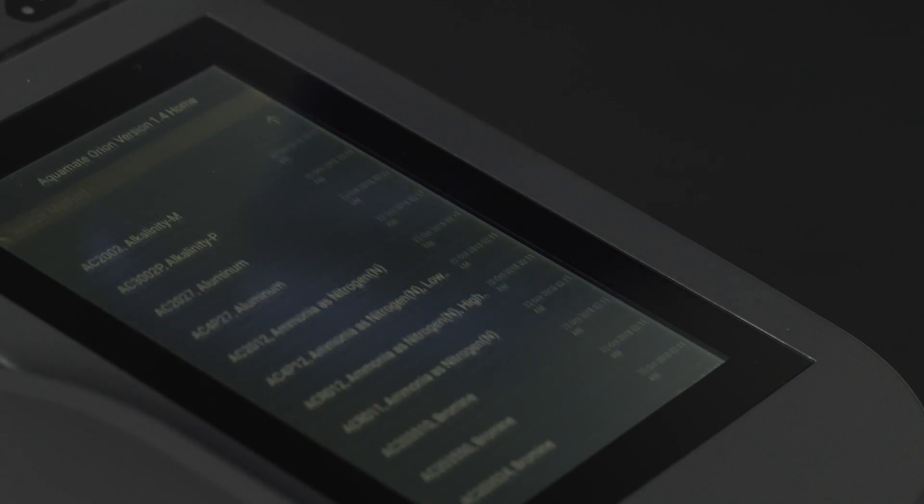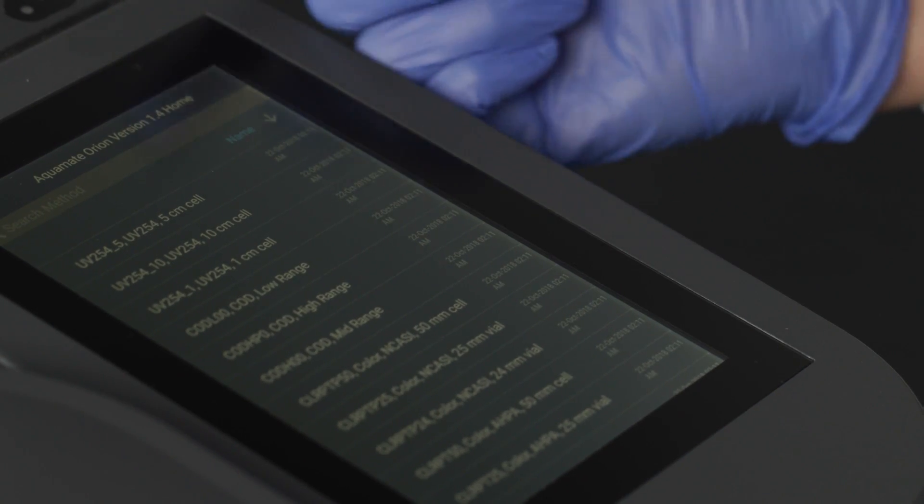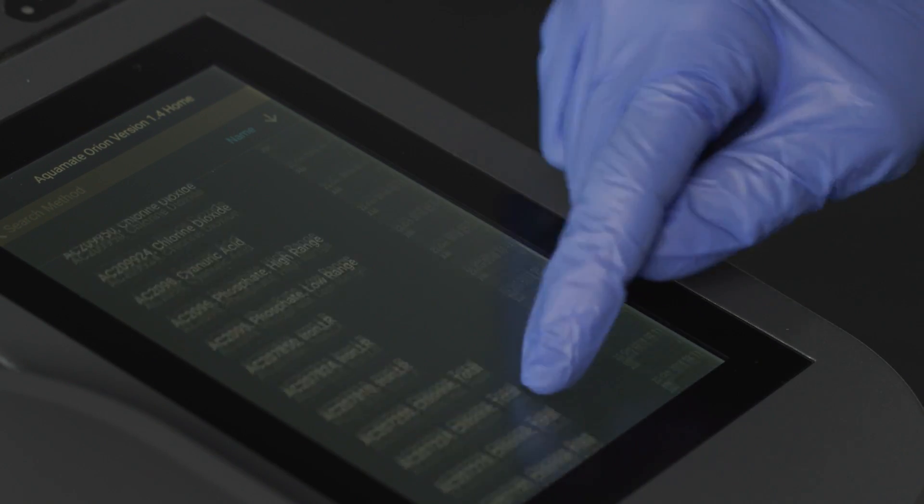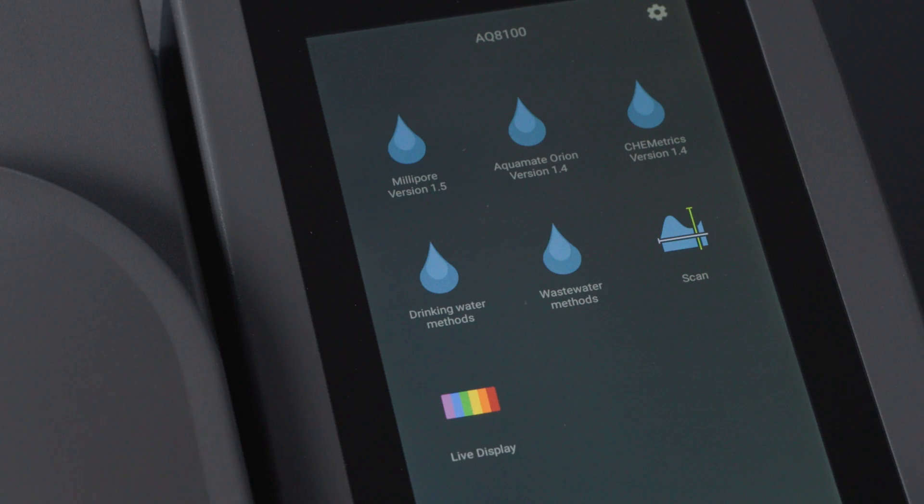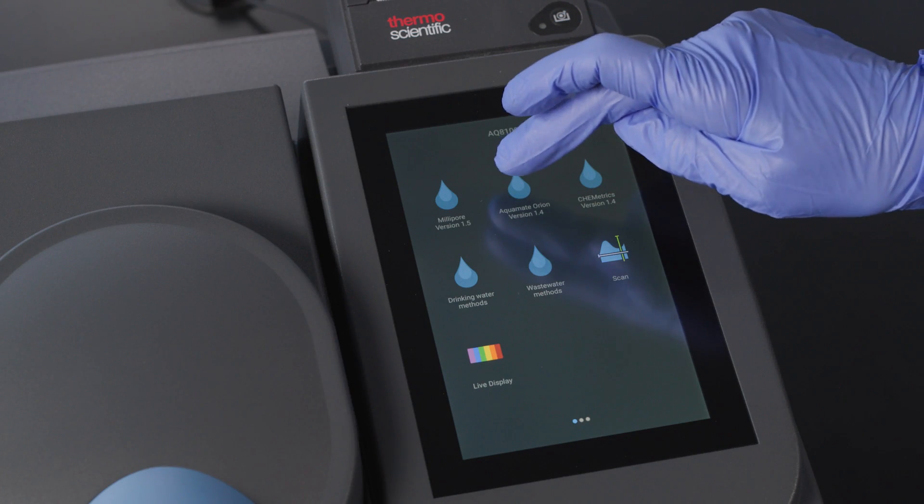We have over 260 water analysis methods that I talked about before organized in easy to find water drop icon folders. For example, here is the Orion methods folder.